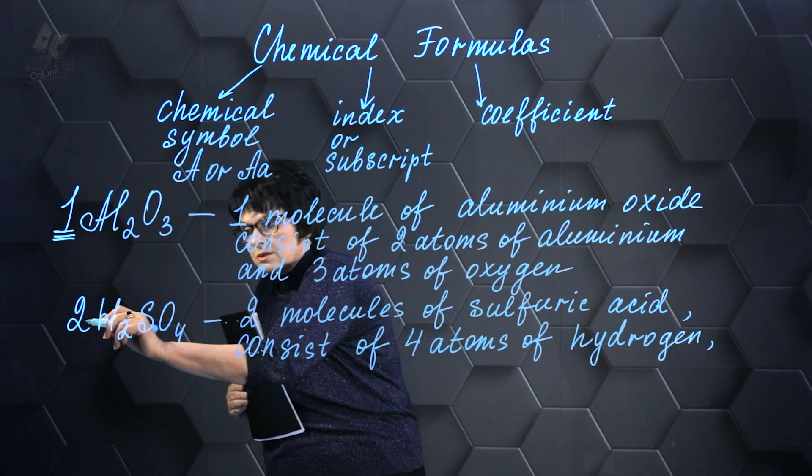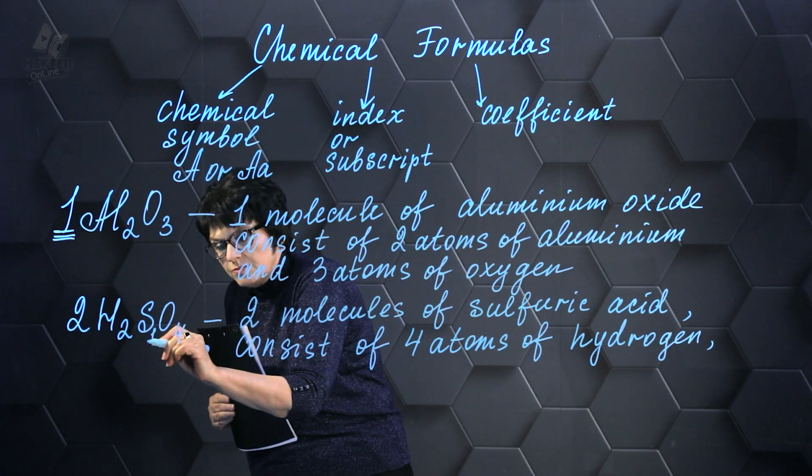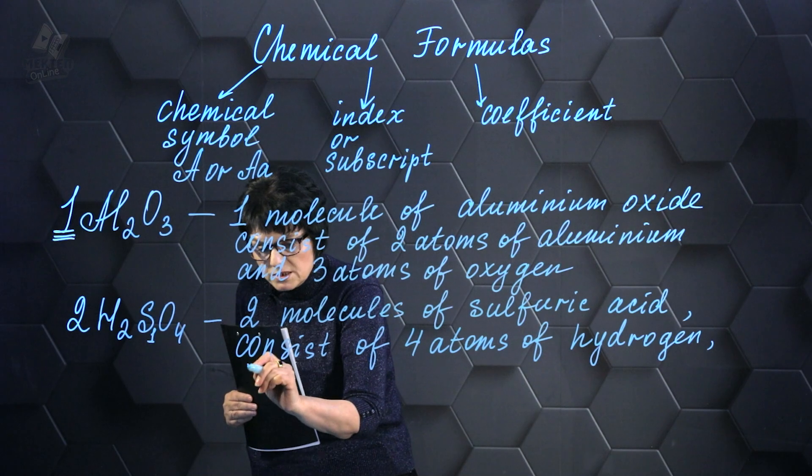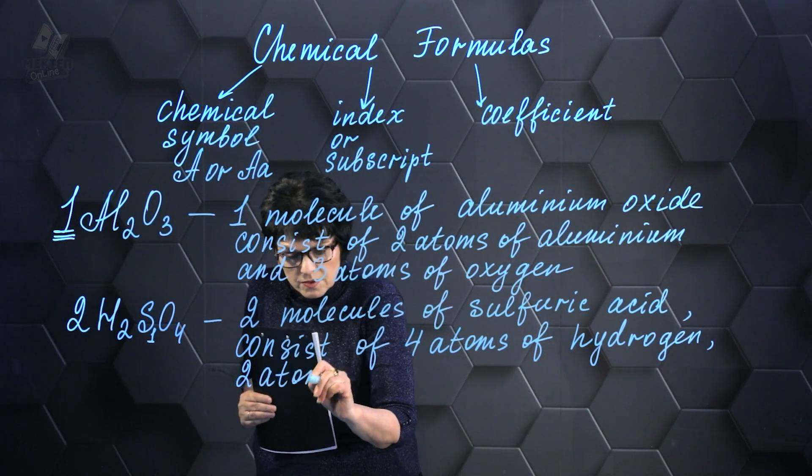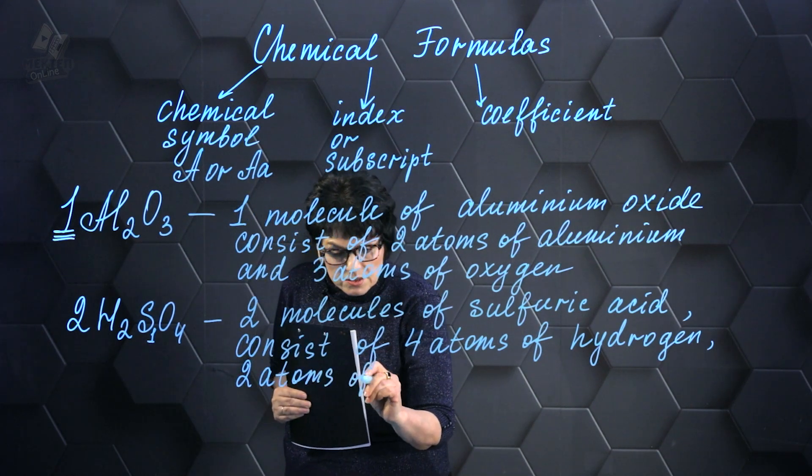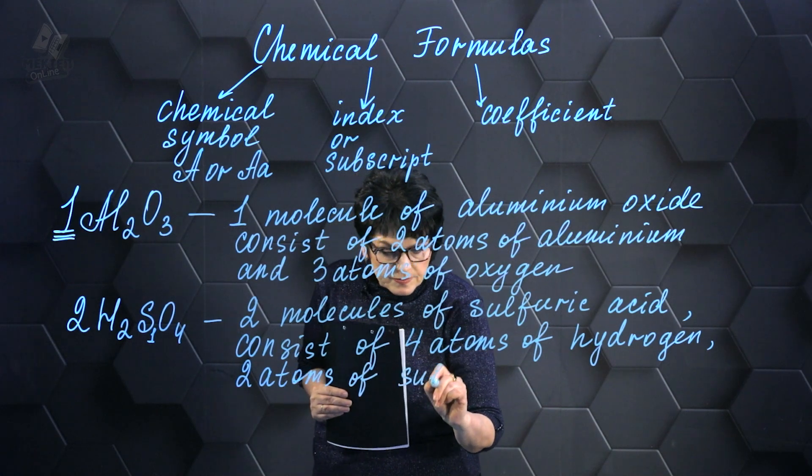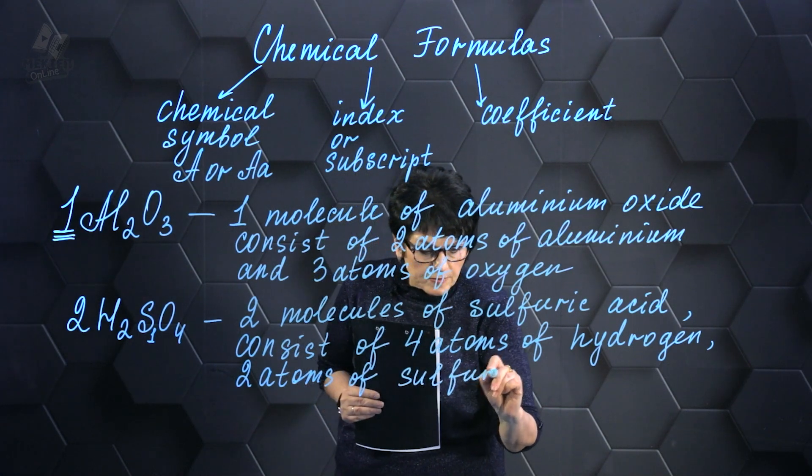Moving on, let's multiply 2 by 1, which signifies that there are 2 atoms of the sulfur element. Although it is not explicitly stated, it is implied by the multiplication. So, the total number of sulfur atoms is 2.